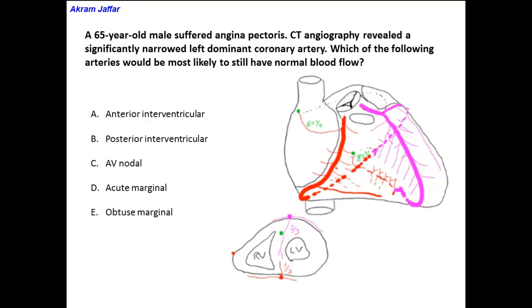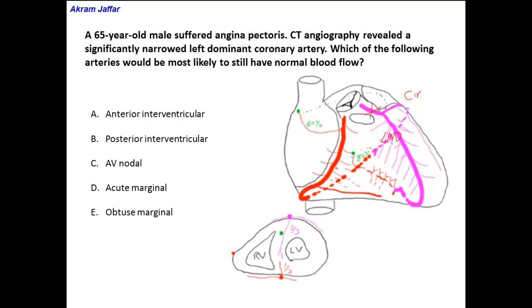This is the left coronary artery here, and the obstruction would be at this location, because the left coronary artery afterwards will divide into a circumflex branch and the left anterior descending, or the anterior interventricular artery. So when the question asks about the left coronary artery, it refers to this piece before its branching.